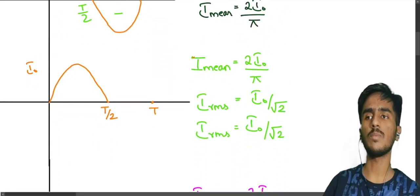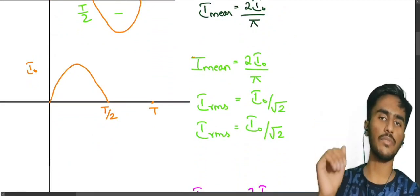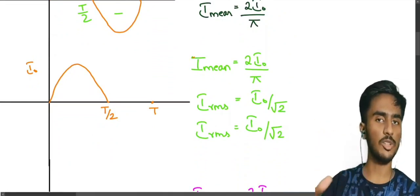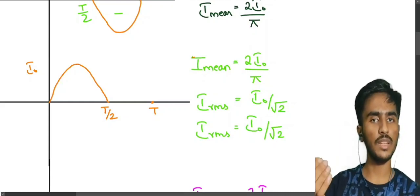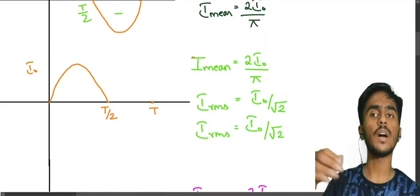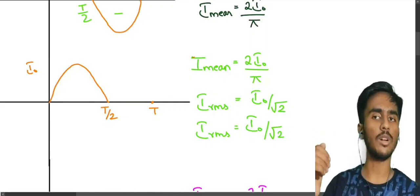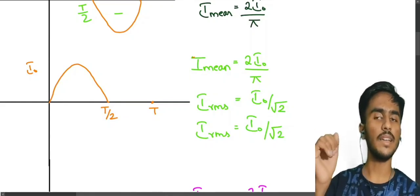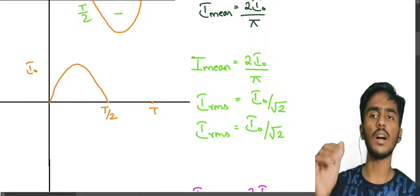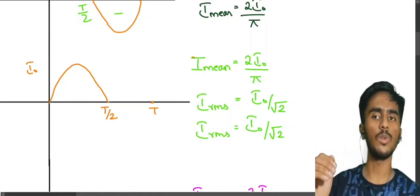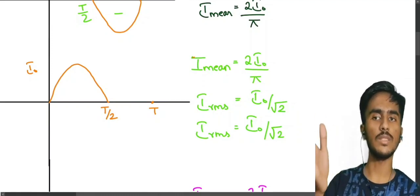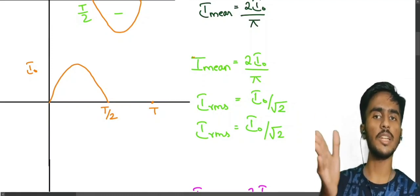Next, we can look at the tan wave graph. For the tan wave, the mean value over a full cycle is 0, since positive and negative parts cancel each other. So I mean equals 2I0 divided by pi. For I RMS, the value is I0 divided by root 2. For the half-cycle (0 to T by 2), I RMS is I0 divided by root 2.